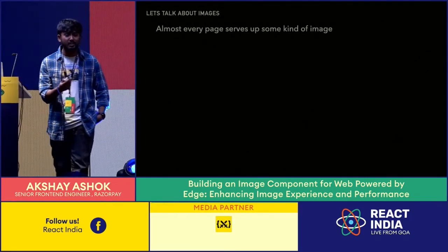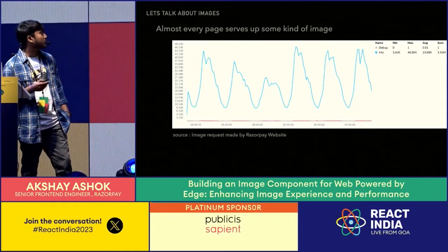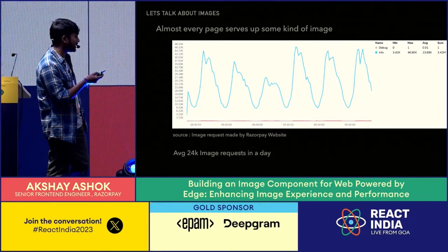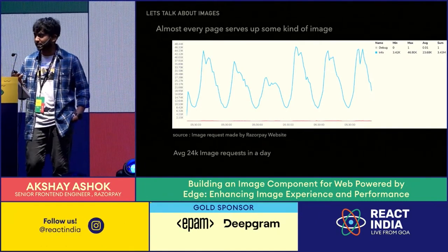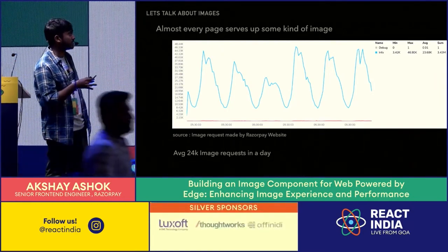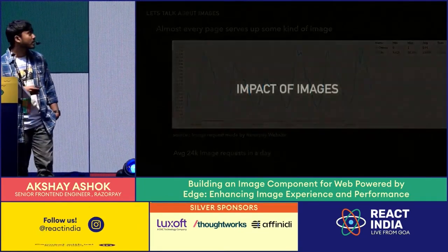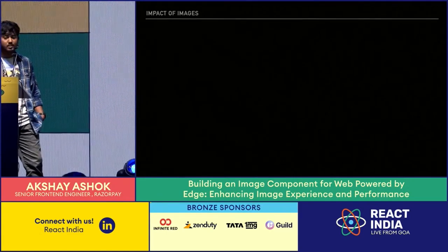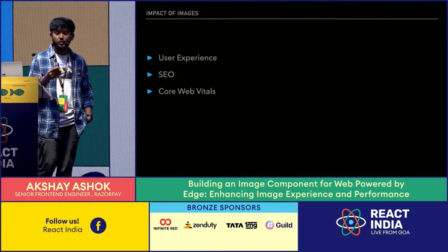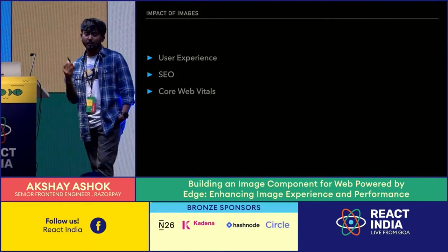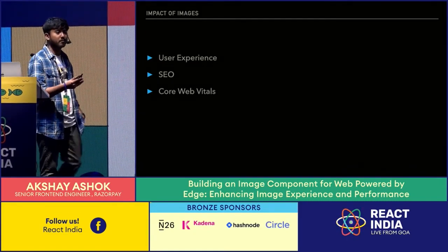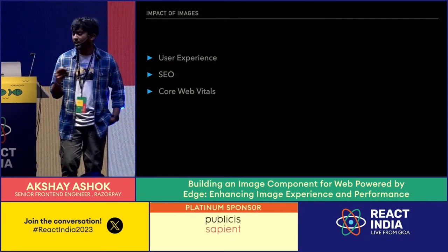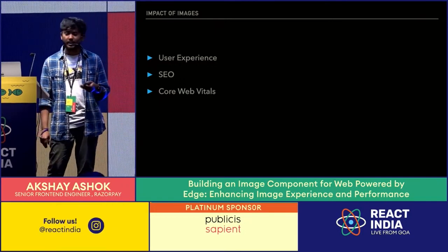Even a simple favicon counts as an image request. On the Razorpay website, image requests averaged 24k per day, with a peak of 46k per day across just a couple of pages. Since images are so numerous, they have a significant impact on user experience, SEO, and core web vitals. Large images slow perceived page load speed and can block other resources, and non-modern formats hurt page ranking.